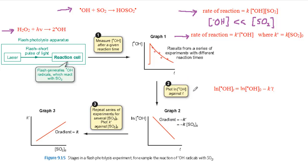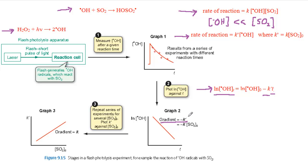Step 2 makes use of the integrated rate equation for a pseudo-first-order reaction. A value of log of the hydroxyl radical concentration is worked out for each of the experiments and the experimental points in Graph 1. These values are plotted against T, the reaction time, as shown in Graph 2. This gives a straight line of gradient minus k′, where k′ is the pseudo-first-order rate constant.